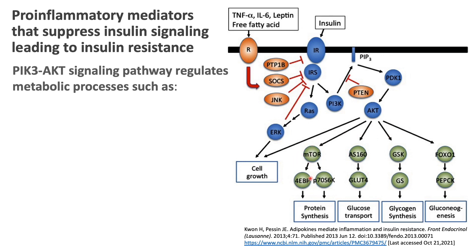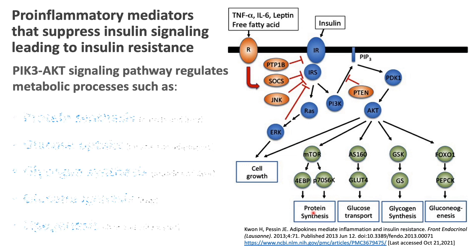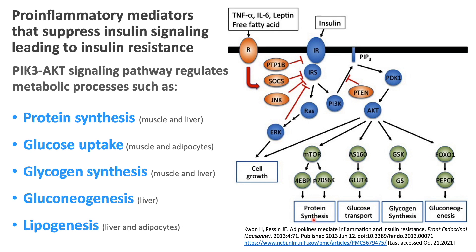These downstream messengers play a role in protein synthesis within the muscle and the liver, glucose transport in muscle and fat cells — where the GLUT4 transporter plays a pivotal role — glycogenesis in the muscle and the liver, gluconeogenesis in the liver, as well as lipogenesis in the liver and the fat cell.